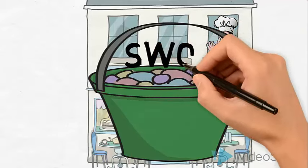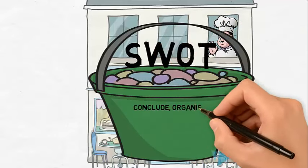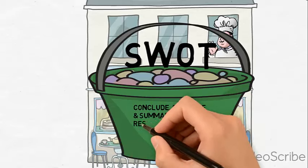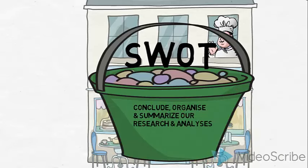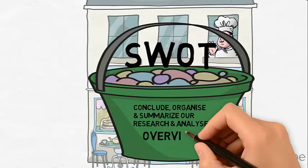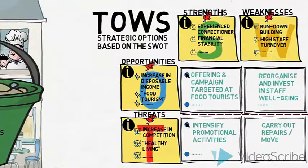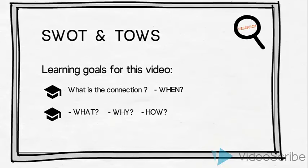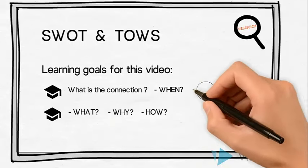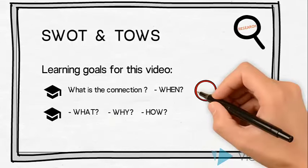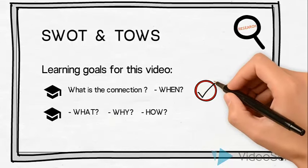So, the SWOT is a useful tool to conclude, organize and summarize our conducted research and analysis. It provides us with a good overview of what our findings mean to the French Café. And the TAOS is a useful tool for taking the next step of generating strategic options — possible actions we can take based on our findings. We have now established a connection by showing when the SWOT and TAOS are used in a research, analysis and strategic planning process.